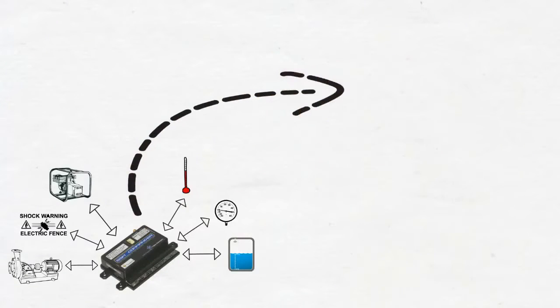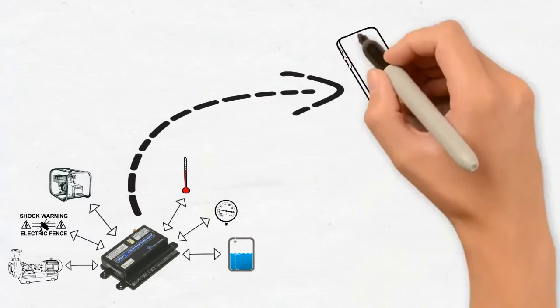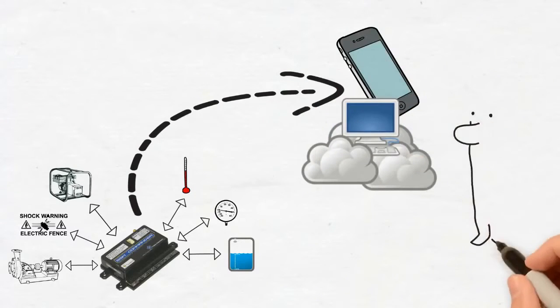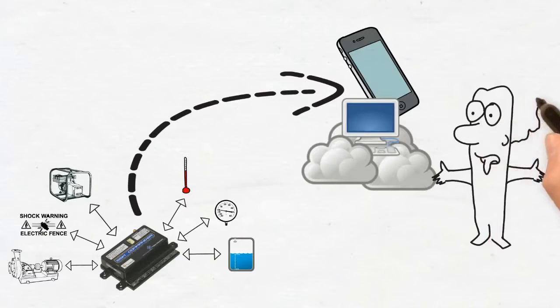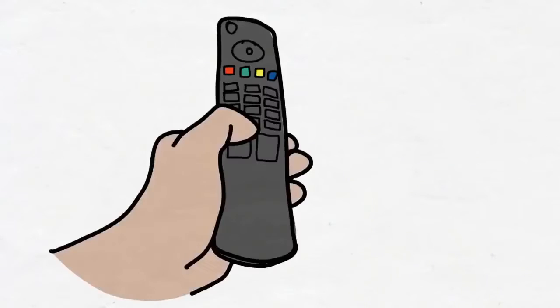The GSM Commander communicates from anywhere in the world, directly to your phone or to an internet server. This allows you to remotely monitor and control any installation from your phone or your browser. Think of it as a remote control on steroids.